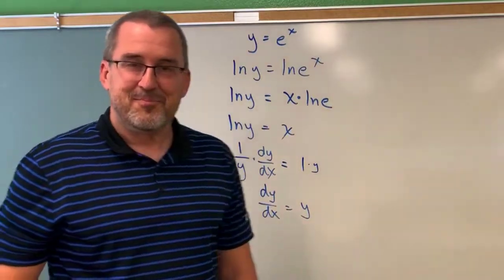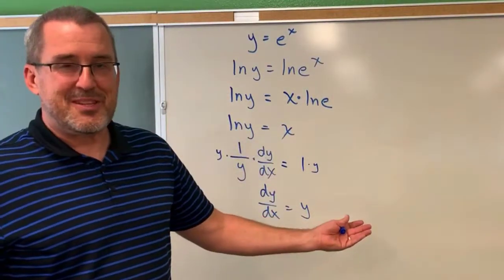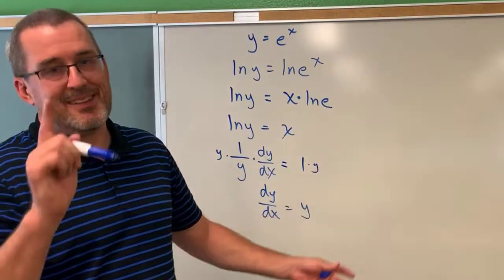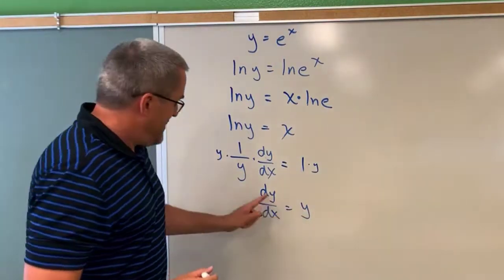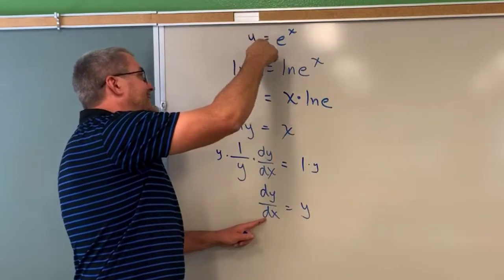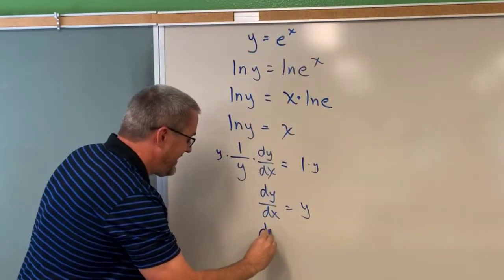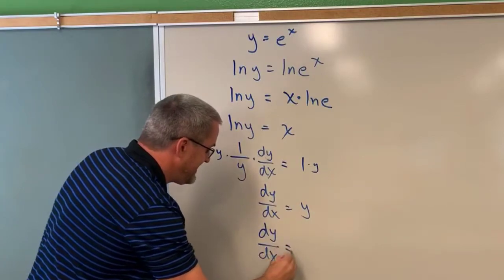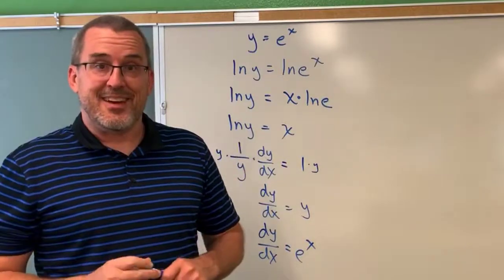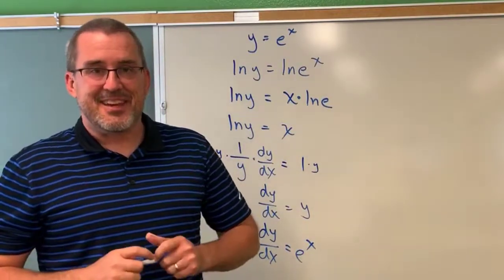Now you might be thinking, well that's crazy, why would the derivative of e^x just be y? Well let's do one more move. The derivative of y with respect to x is equal to y, but y is equal to e^x. So we can now claim that dy/dx is equal to e^x. As we showed in the previous video, the derivative of e^x is indeed just e^x.